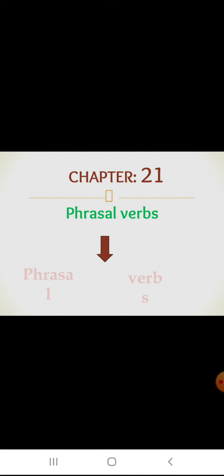Already we have learnt about the phrase and the verb. So what is a phrase? A phrase is a group of words. With the help of a subject and verb it will give a meaning, but alone it will not give a meaning. Verb, as we all know, is an action.